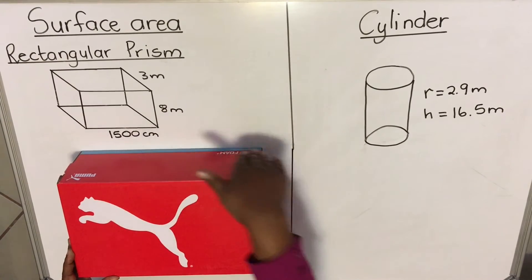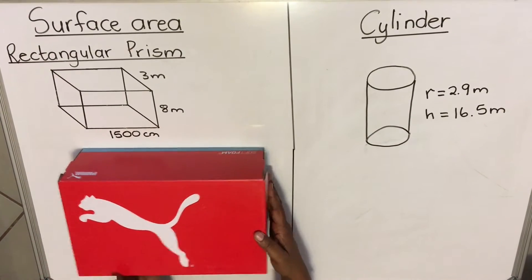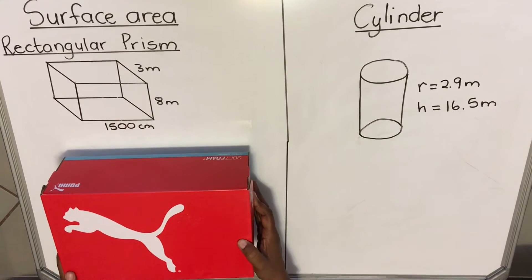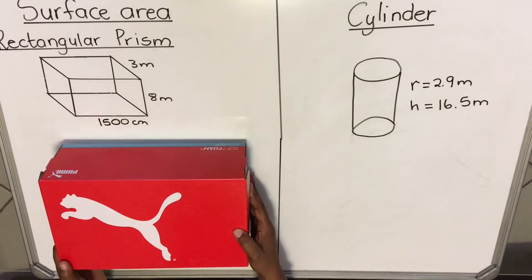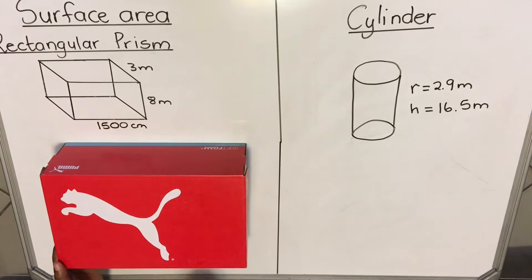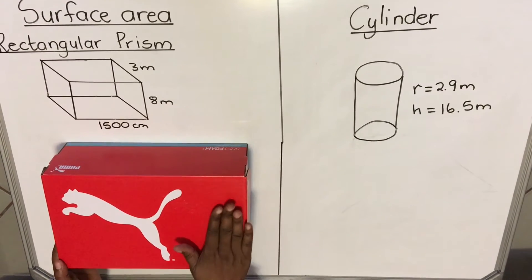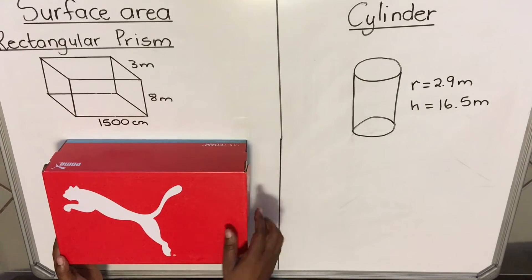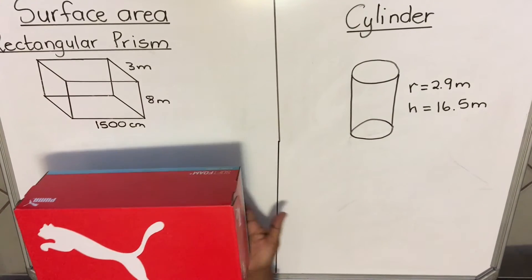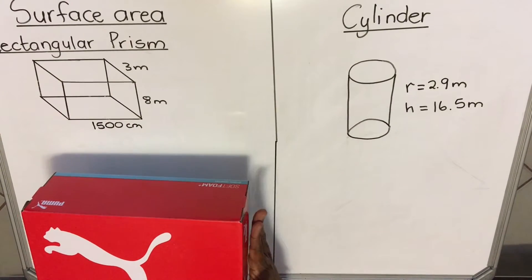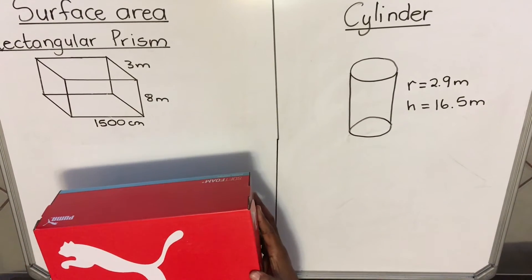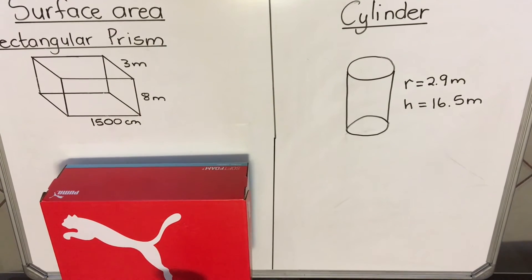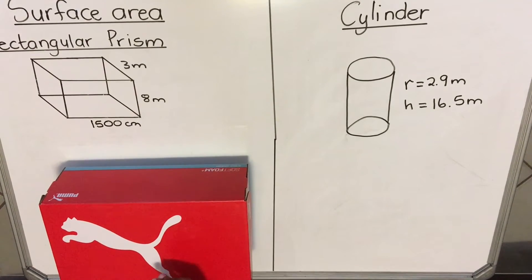The surface area covers this part, that part, that one, that one, and the bottom one. A rectangular prism is made up of rectangles — that's why it's called a rectangular prism. The area of a rectangle is length times breadth. When you look at the faces, this rectangle is the same as the bottom one, and this one is the same as that one — the rectangles come in matching pairs.